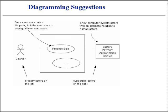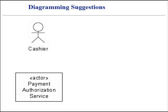Draw a simple use case diagram in connection with an actor goal list, with primary actors on the left and supporting actors on the right side. For a use case context diagram, limit the use cases to simple user goal level. Show the computer system actor with an alternate notation compared to the human actor in case drawing.